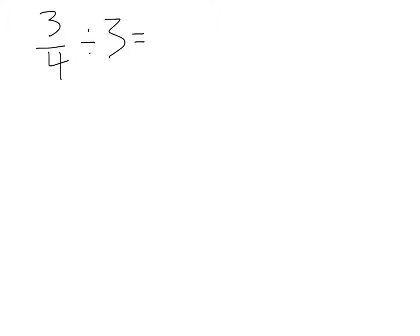Well, you might be thinking to yourself, I know how I can do this. I can just keep switch flip, as we say. I can keep the first thing, 3 fourths, and I can switch the division to multiplication, and then instead of 3 as a fraction, 3 over 1, I'm going to do 1 third. And I'm going to solve it that way.